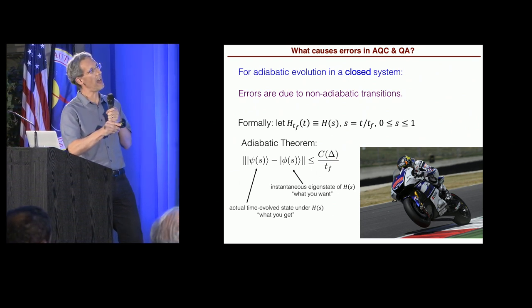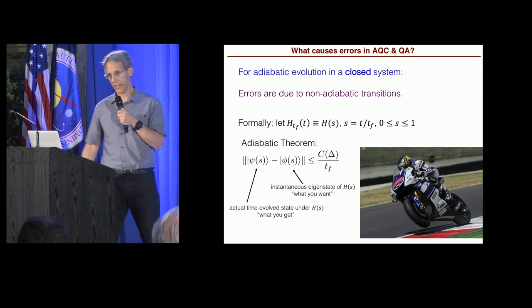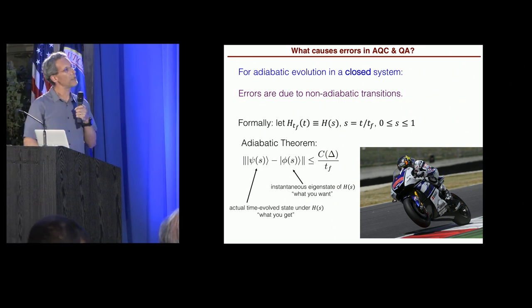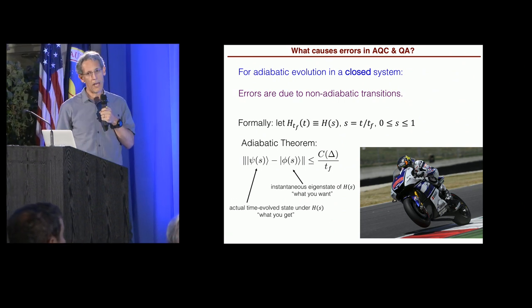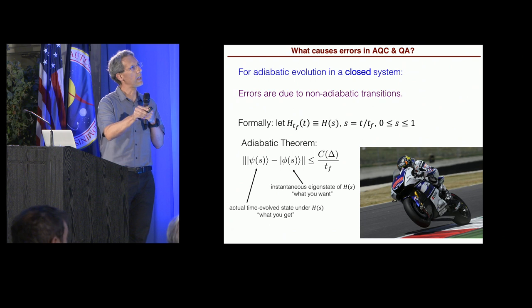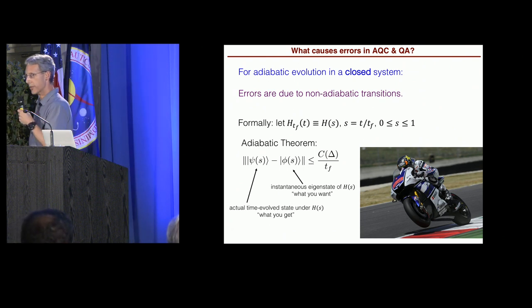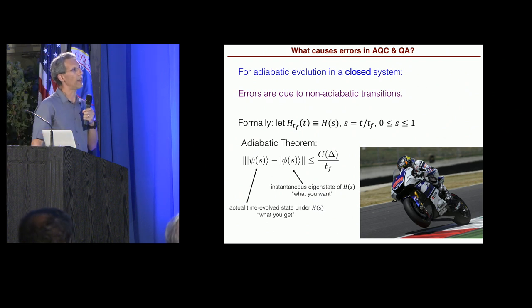that distance is upper bounded by some constant that depends on the gap divided by the total evolution time, tf, the final time. All right. It goes like 1 over tf. So if you want to make this error small, what are you going to do? Well, you, instead of going fast, you can go slowly.